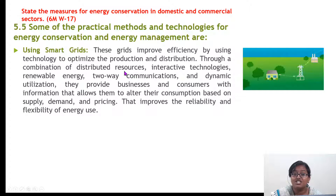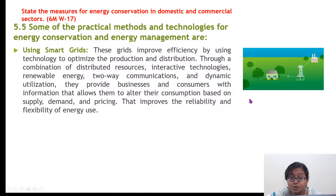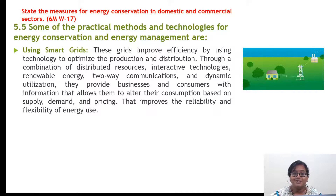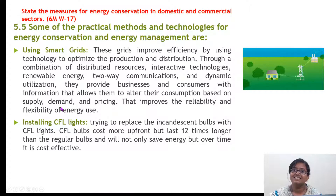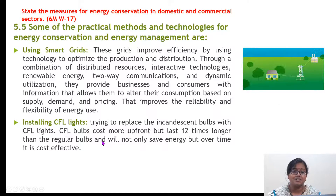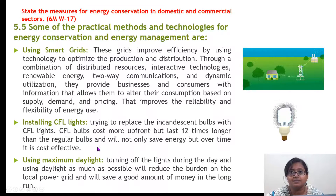Smart grids improve efficiency by optimizing production and distribution through a combination of distributed resources, interactive technologies, renewable energy, two-way communications, and dynamic utilization. They provide businesses and consumers with information allowing them to alter their consumption based on supply, demand, and pricing - improving the reliability and flexibility of energy use. Secondly, installing CFLs: when you replace filament lamps and tube lights with CFLs, you save a lot of energy, and CFLs last 12 times longer than regular bulbs.